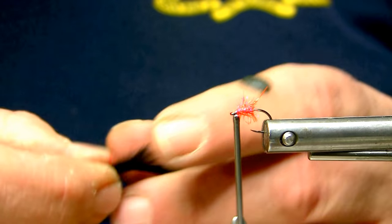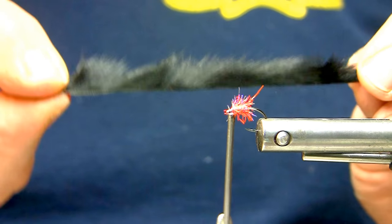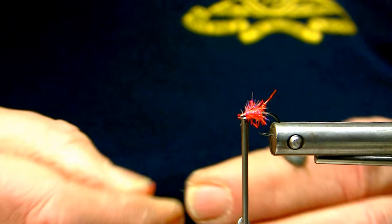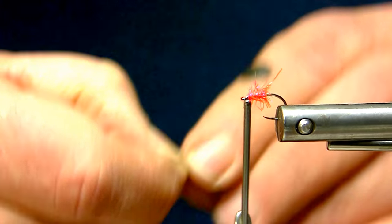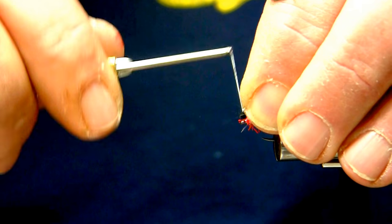Now I'll just add in a strip of zonker cut squirrel. And I prefer squirrel over rabbit because it's smaller, lighter, thinner. And it just does, for me, it just does a better job to keep the profile exceptionally small and slender.